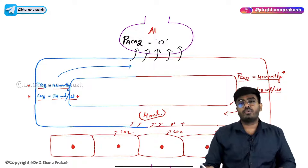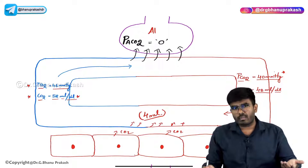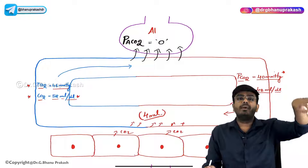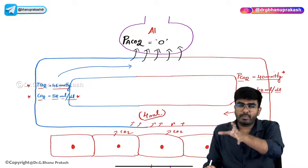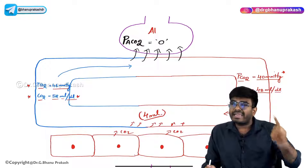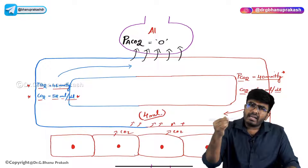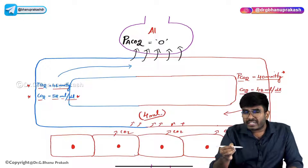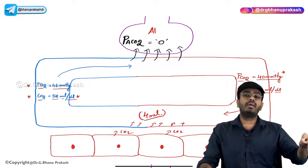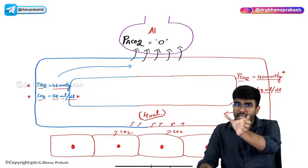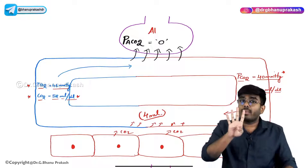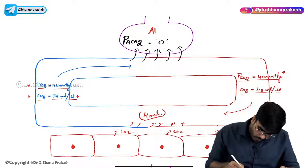So 4 ml of carbon dioxide is picked up - 100 ml of blood goes to the tissues carrying 48 ml and comes back with 52 ml, catching up 4 ml of carbon dioxide. Just to recap: when discussing oxygen transport, 100 ml of oxygenated blood carries 20 ml of oxygen to the tissues, and deoxygenated blood coming out has 15 ml, so 5 ml is delivered. The same 100 ml blood will take up 4 ml of carbon dioxide and come back to the lungs.